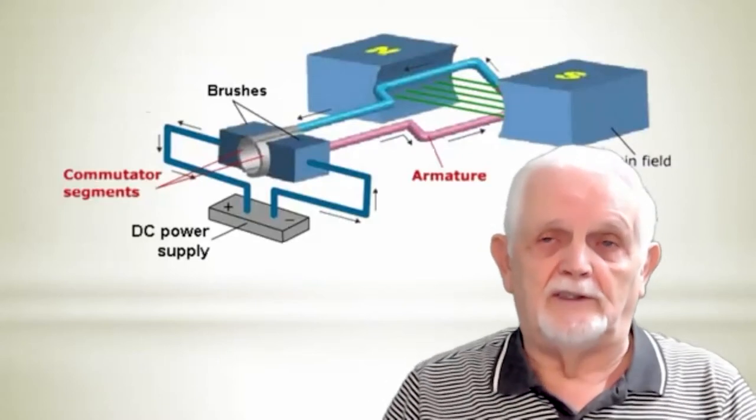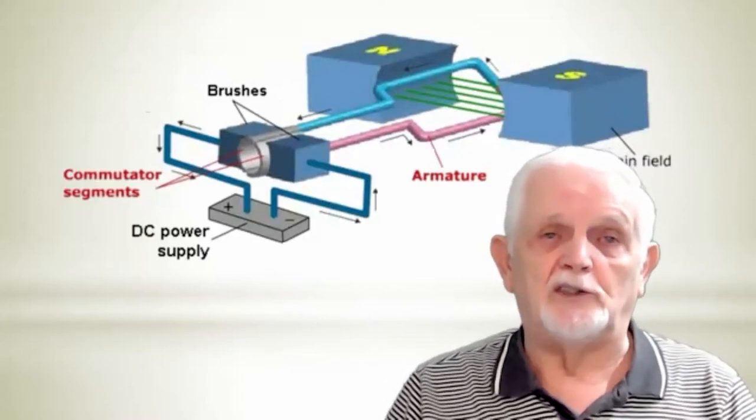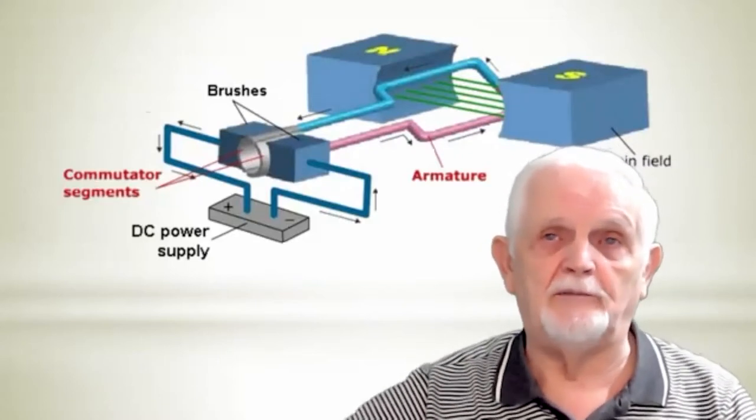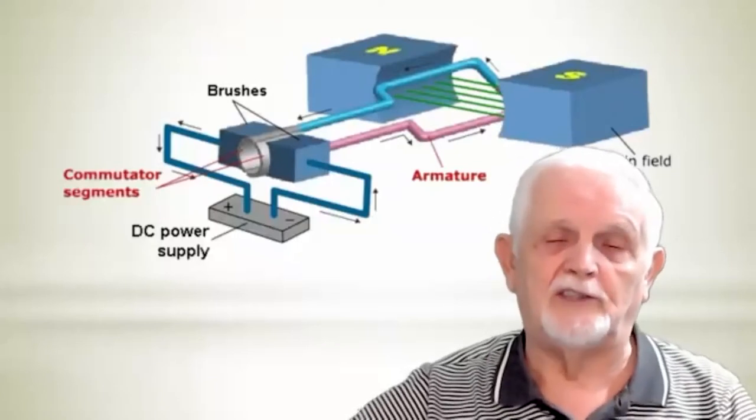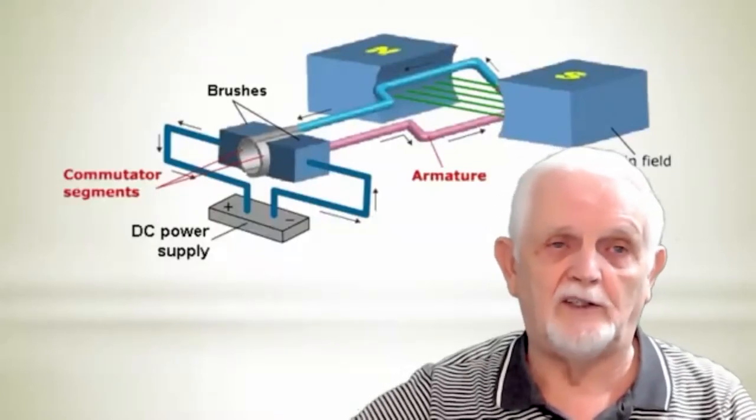So the most common one that is in use is the iron core DC motor, the most common one for model railways by far. That's the usual image that they show for its construction, just a coil rotating inside a pair of permanent magnets.